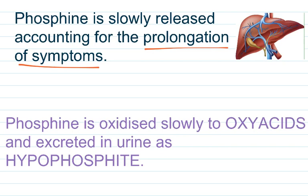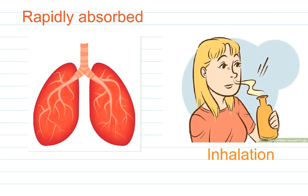Phosphine is oxidized slowly to oxy acids and excreted in urine as hypophosphate. It is also rapidly absorbed from the lungs after inhalation and excreted in unchanged form through the lungs.